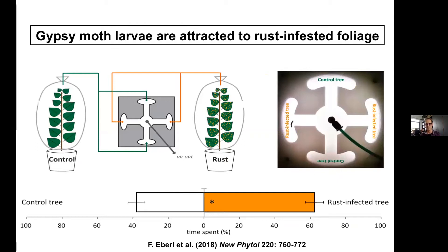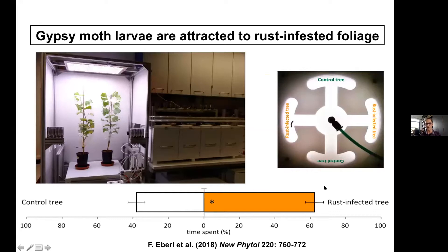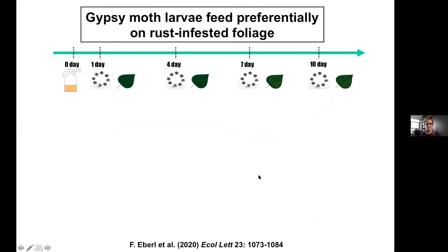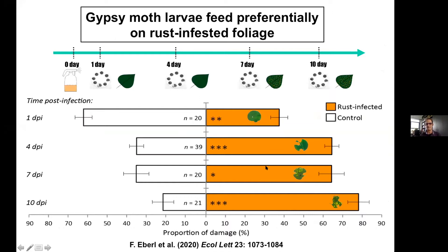Sibylla and Almut co-supervised a PhD student named Francisca Averill. Franzi first showed in the lab that this attraction Sibylla had noted in the field was real — gypsy moth larvae were attracted to foliage with the rust fungus and also fed more on it. As the extent of rust fungus damage increased, caterpillars fed more and more on the rust-infected leaves, clearly telling us there was something appealing about the rust.